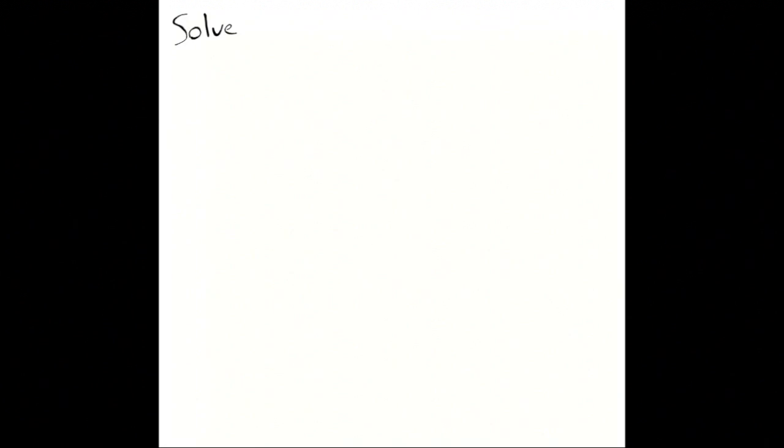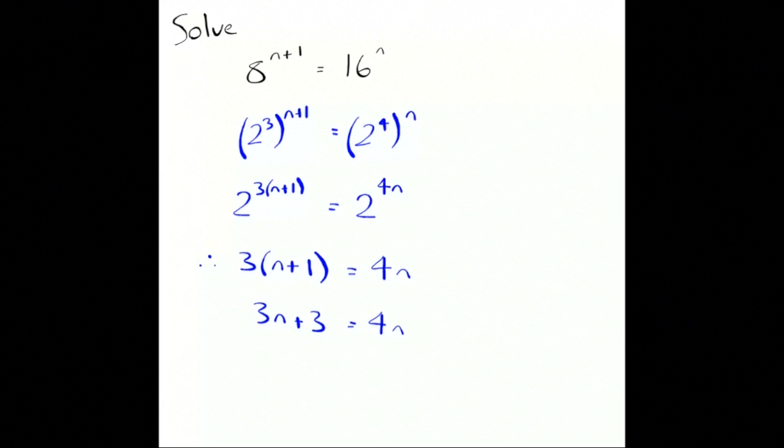We're going to solve some more. We're going to solve 8 to the n plus 1 equals 16 to the n. We need them to have the same base number. They'll both share a 2 as the base. So, that's 2 cubed to the n plus 1, 2 to the 4 to the n. Remember, when we've got a power to a power, we can just time them together. So, that gives us 2 to the 3n plus 3 equals 2 to the 4n. It tells us that 3 bracket n plus 1 equals 4n. It tells us that 3n plus 3 is 4n. It tells us that n is just 3.